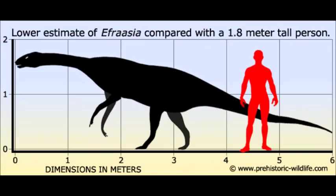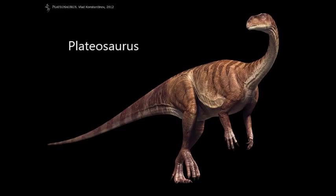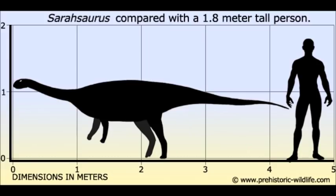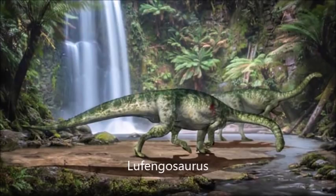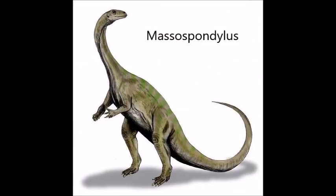Efraasia is evidently herbivorous — no surprise there — and seems to be facultatively quadrupedal, meaning that it could walk bipedally or quadrupedally depending on the situation. The same is true of the popularly known Plateosaurus, as well as other lesser known sauropodomorph genera, including Sarahsaurus, Lufengosaurus, and Massospondylus.